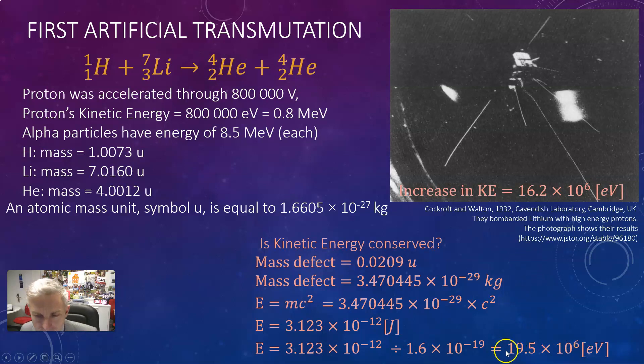So mass defect gives us an extra 19.5 MeV and I can say I've increased my kinetic energy by 16.2 MeV, that is the mass defect supplies the extra kinetic energy. The remaining kinetic energy can be lost in other forms.